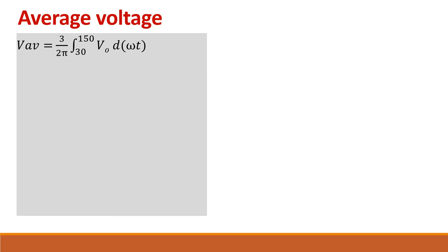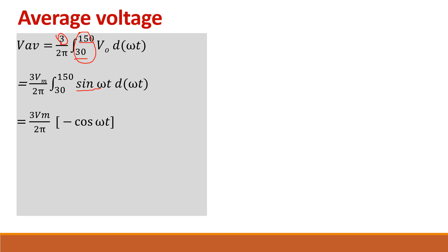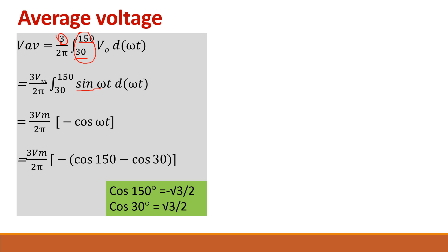Now let us find the average voltage. V_average = (3/2π) × ∫ VM sin(ωt) d(ωt), integrated from 30° to 150° for one pulse, then multiplied by 3 for the three pulses. Integrating sin(ωt) gives −cos(ωt). Applying the limits: cos(150°) = −√3/2 and cos(30°) = √3/2. Substituting all values gives the output average voltage formula.